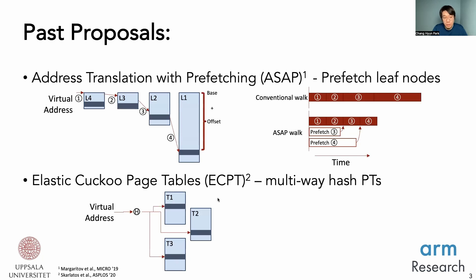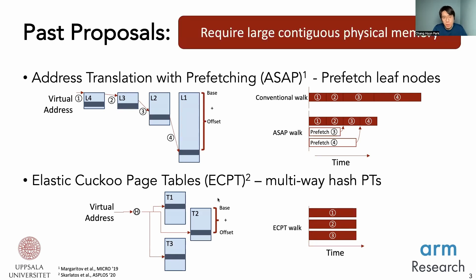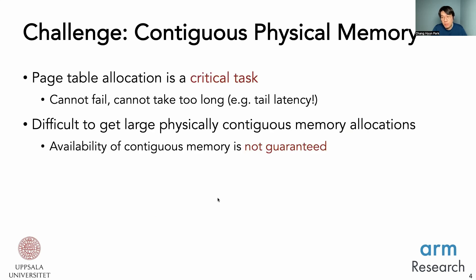ECPT makes use of the memory-level parallelism available in today's hardware. Given a virtual address, a hash function creates three different hashes, and the hashes are used as base-plus-offset calculations to generate memory accesses in parallel — three or more memory accesses are issued into the system in parallel. One problem common to both works is that they require large contiguous physical memory, and it is a challenge to obtain this.